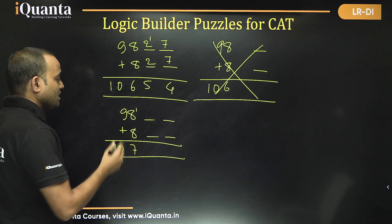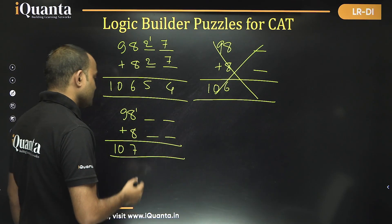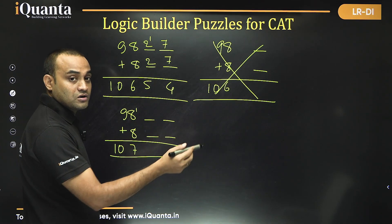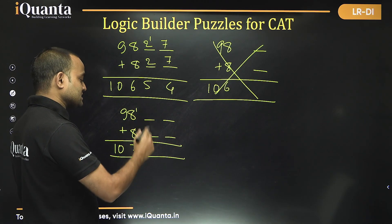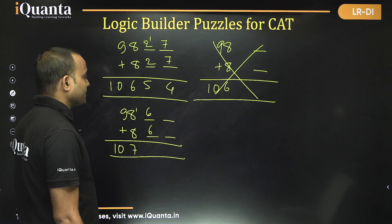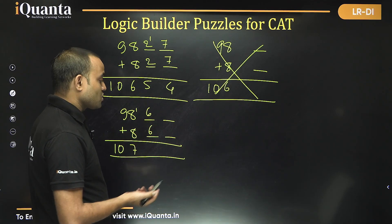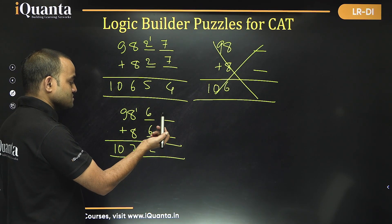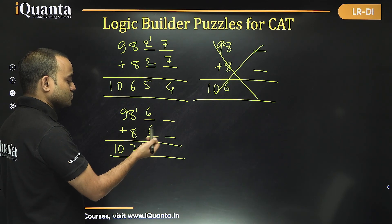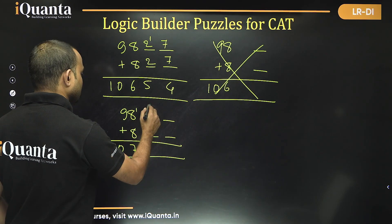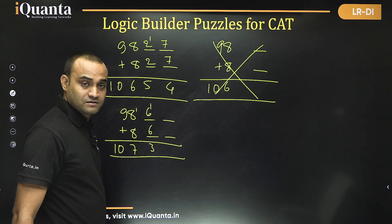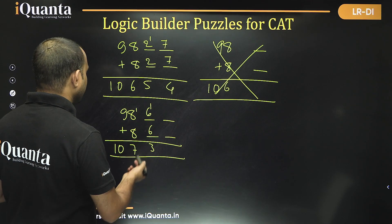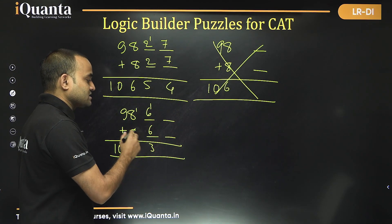Continuing to check C=6 for B=8: 6+6=12 or 13. If digit is 2 and no carry-forward: D cannot be 0, 1, 2, 3, or 4 in any valid way. With carry-forward, 6+6+1=13, digit=3 — but then D values like 5, 6, 7, 8, 9 are all already used or produce digits already taken. So C=6 is not valid for B=8. Therefore there are exactly 4 valid cases possible in total.